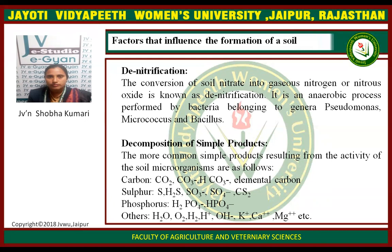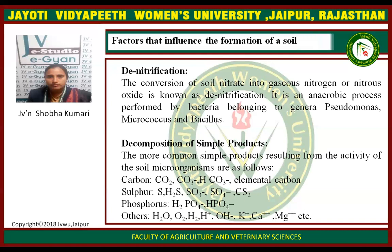Decomposition of simple products. How does decomposition of simple products occur? The more common simple products resulting from the activity of soil microorganisms are the following: Carbon compounds — CO2, CO3, HCO3, elemental carbon — sulfur, phosphorus, and others, including H2O, O2, H2, H+, OH-, K+, calcium, magnesium, etc.